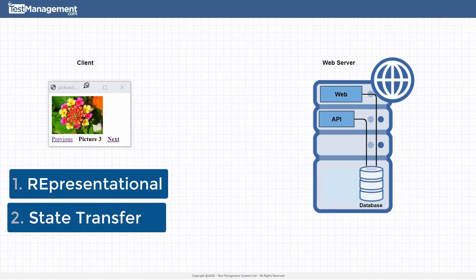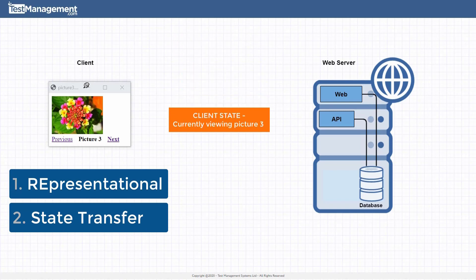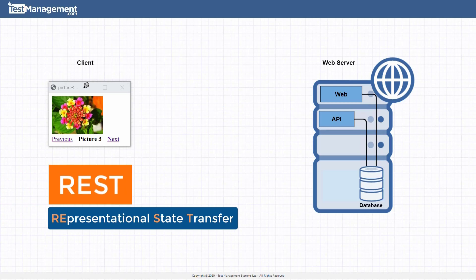Secondly, state transfer — meaning the condition or state of the client is transferred from the client to the server in an API request. Which is where the title REST comes from: representational state transfer.